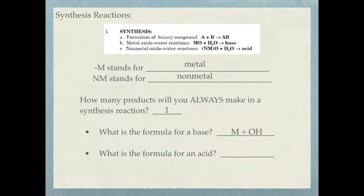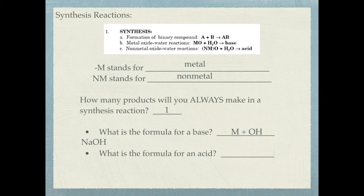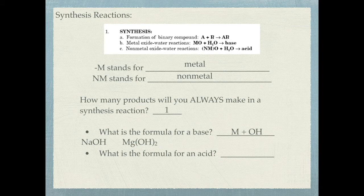For example, sodium hydroxide has the formula NaOH because sodium has a plus one charge and hydroxide has a minus one charge. For magnesium hydroxide, since magnesium has a two plus charge and hydroxide has a one minus charge, the formula once you cross your charges would be Mg(OH)2. For calcium, because it's a metal with a two plus charge and hydroxide is minus one, it's Ca(OH)2. So those are bases.